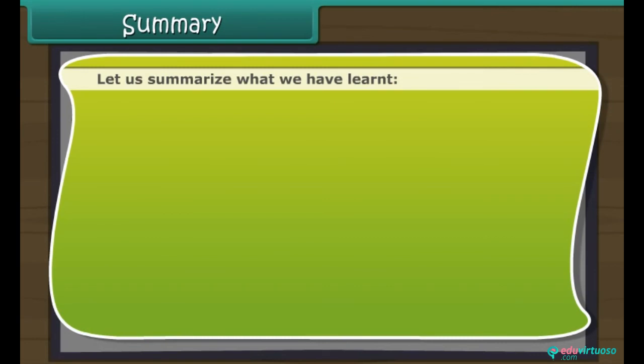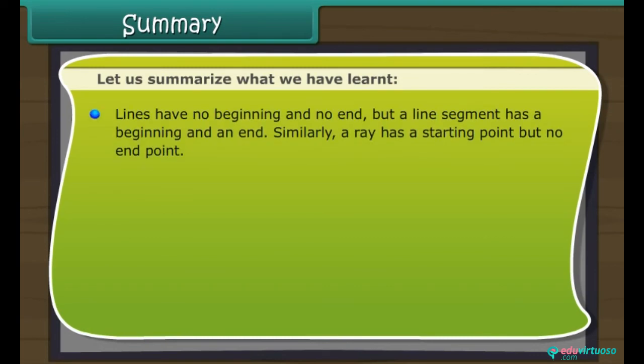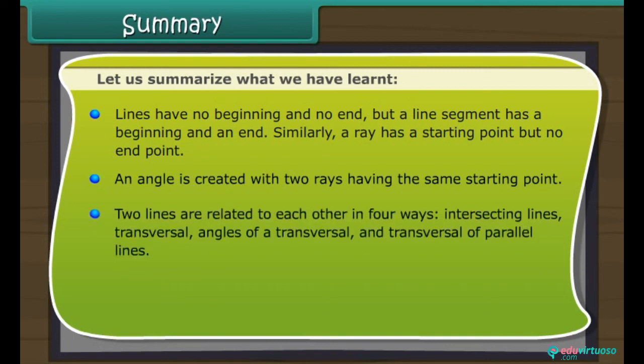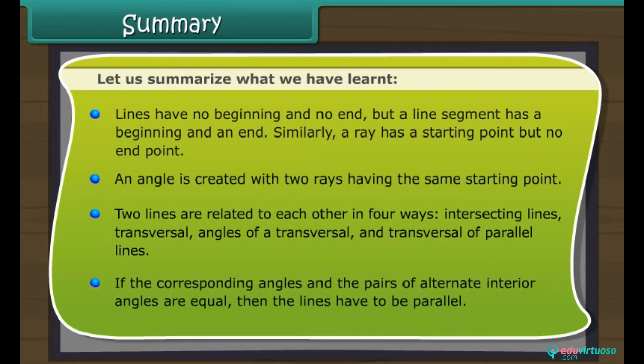Let us summarise what we have learnt. A line has no beginning and no end, but a line segment has a beginning and an end. Similarly, a ray has a starting point but no end. An angle is created with two rays having the same starting point. Two lines are related to each other in four ways: intersecting lines, transversal, angles of a transversal, and transversal of parallel lines. If the corresponding angles and the pairs of alternate interior angles are equal, then the lines have to be parallel.